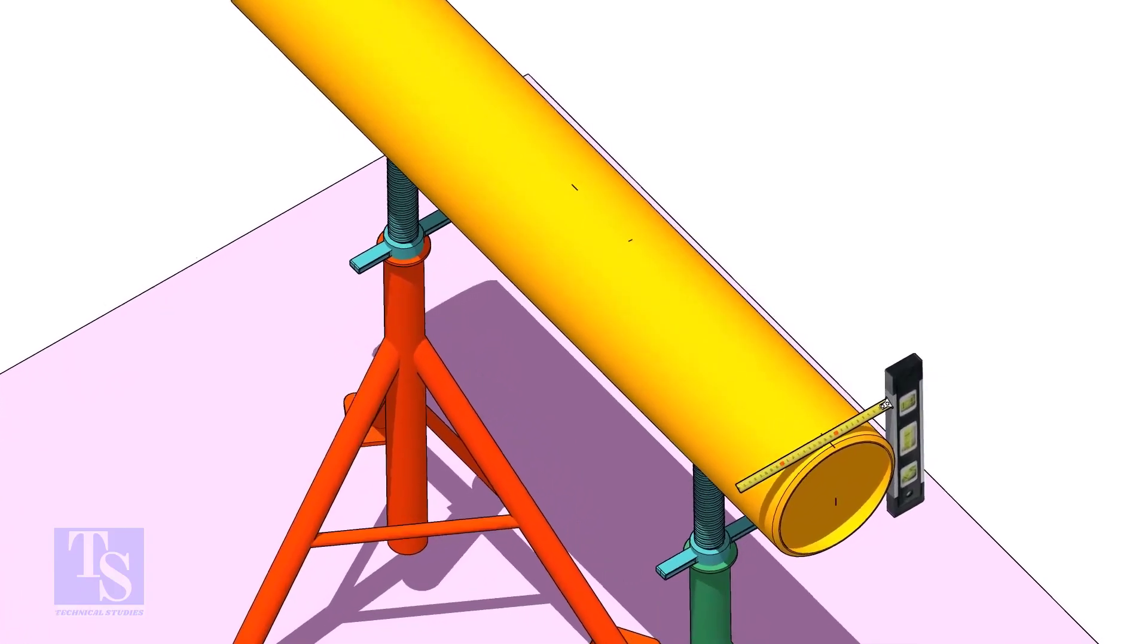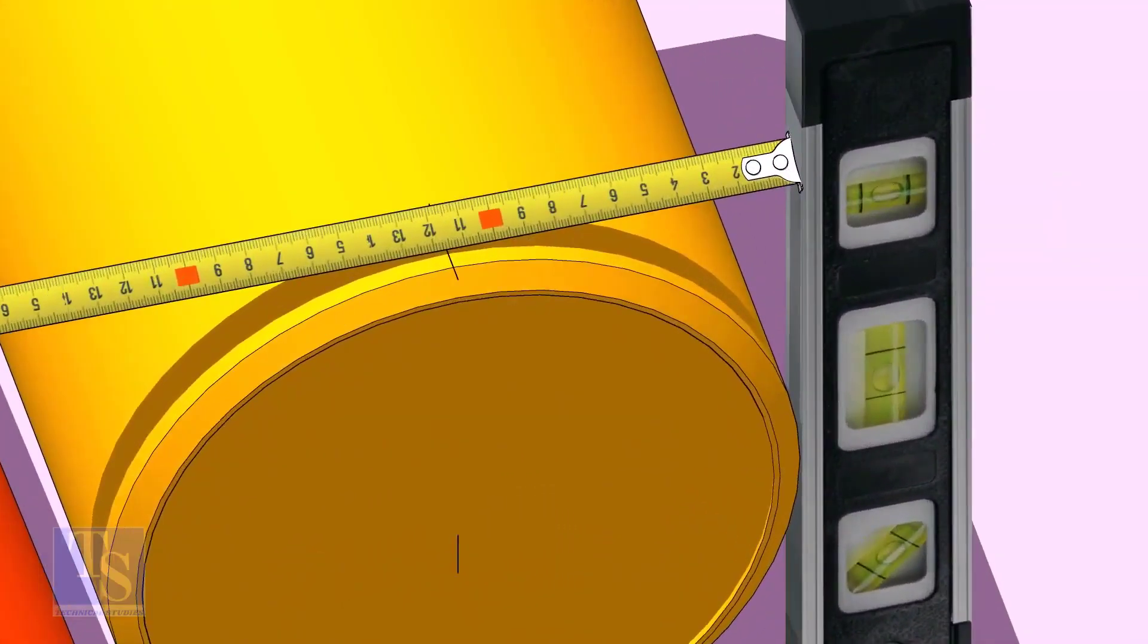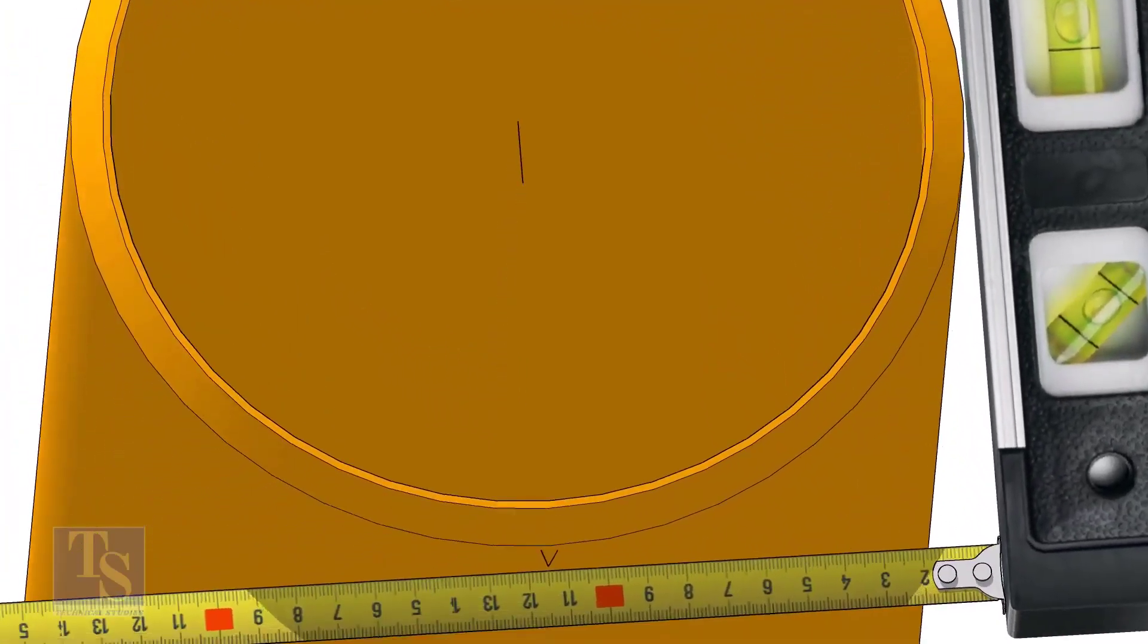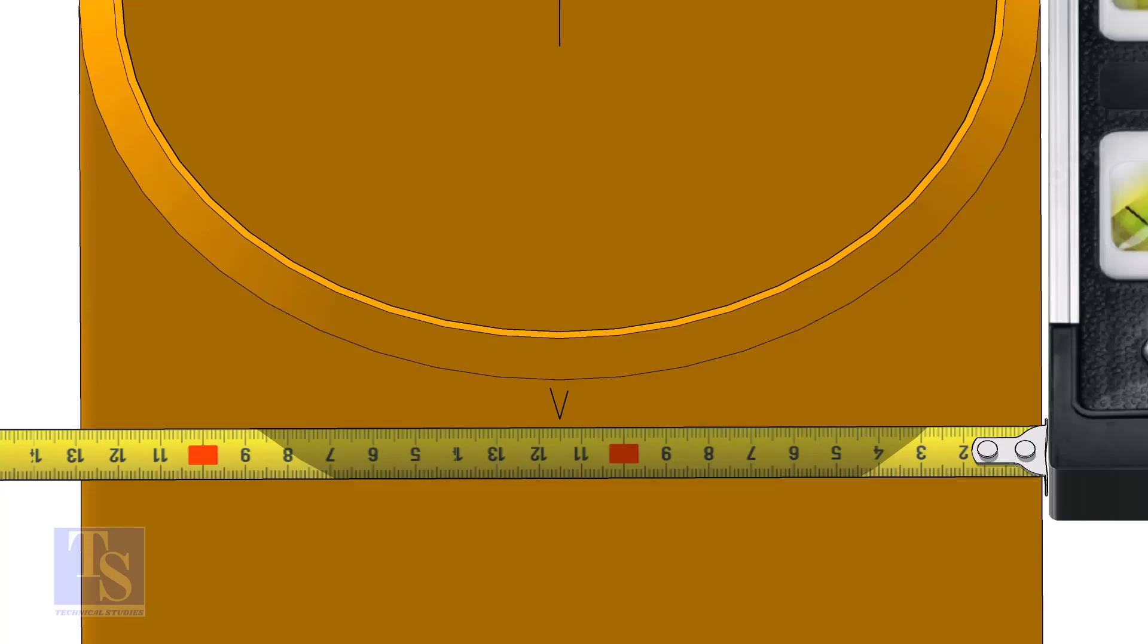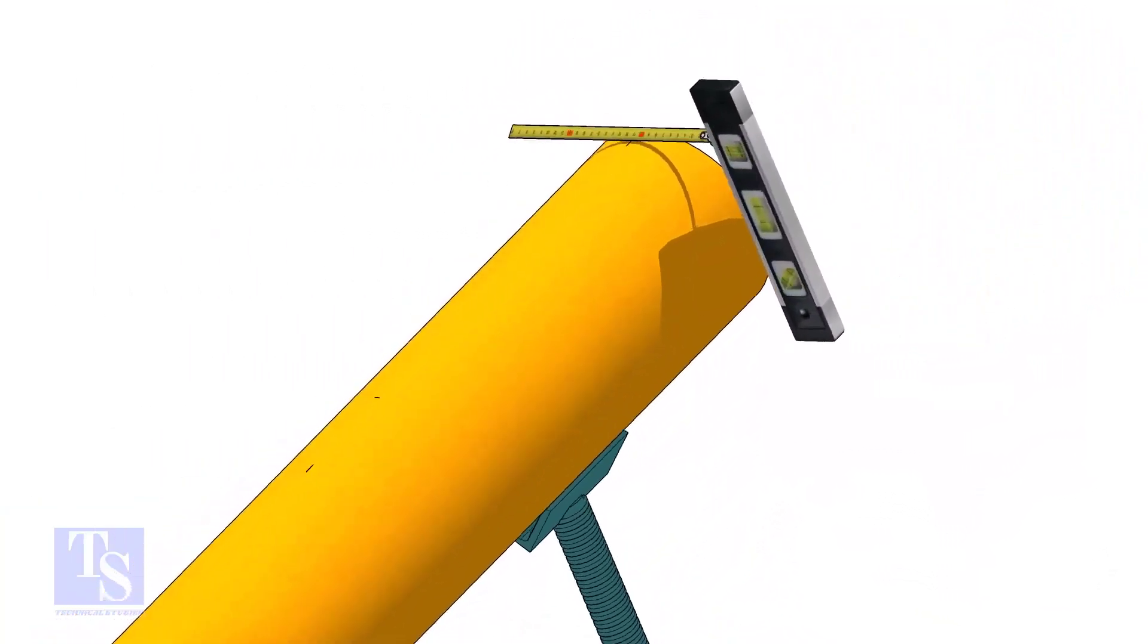Mark the center line of the header on the top and the bottom. Hold a level bottle firmly and vertical at the side of the pipe as shown, mark half OD at the top and the bottom side of the pipe. Cross check the dimension from the opposite side to ensure the marking is correct.